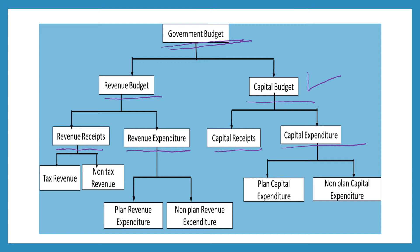In the government budget, you can see two types of classification of expenditure: one is revenue expenditure, another one is capital expenditure. Revenue expenditure has two types — planned revenue expenditure and non-planned revenue expenditure. Under capital expenditure, we have planned capital expenditure and non-planned capital expenditure.